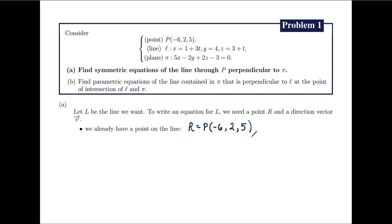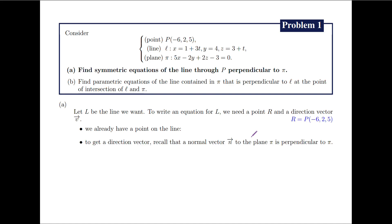Next, to get a direction vector V, recall that the normal vector n to the plane pi is perpendicular to pi. Since capital L must be perpendicular to the plane pi as well, we can simply take the direction vector V to be a normal vector to pi, say n with coordinates 5, negative 2, and 2.